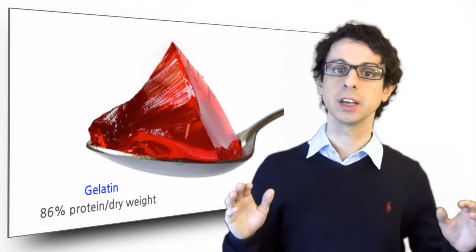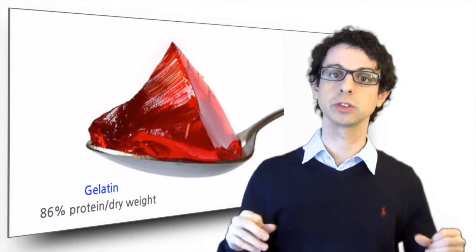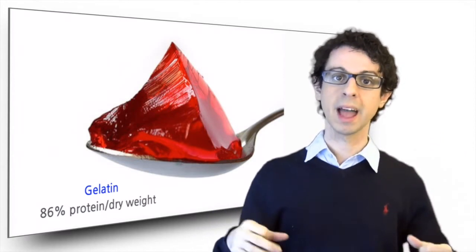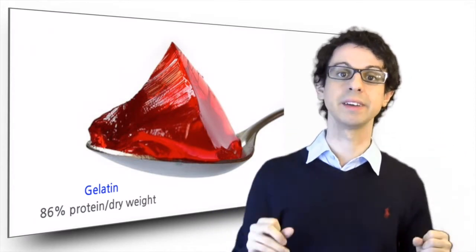Gelatin is obtained from collagen. So if you take the bones and skins and other collagen-rich tissues of animals - cattle, poultry, fish - and boil them for a very long time, and then dry what you have extracted, you get a powder that has a very nice property.